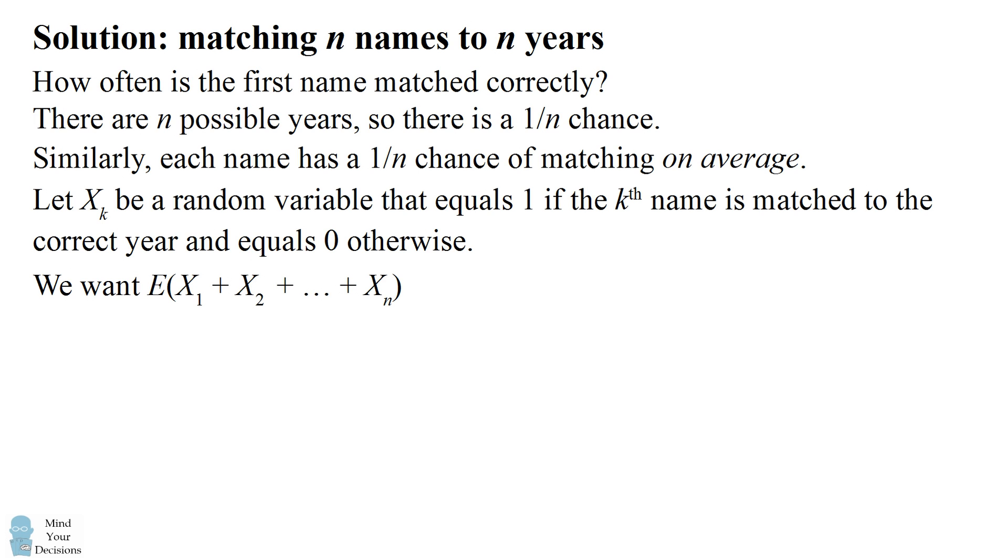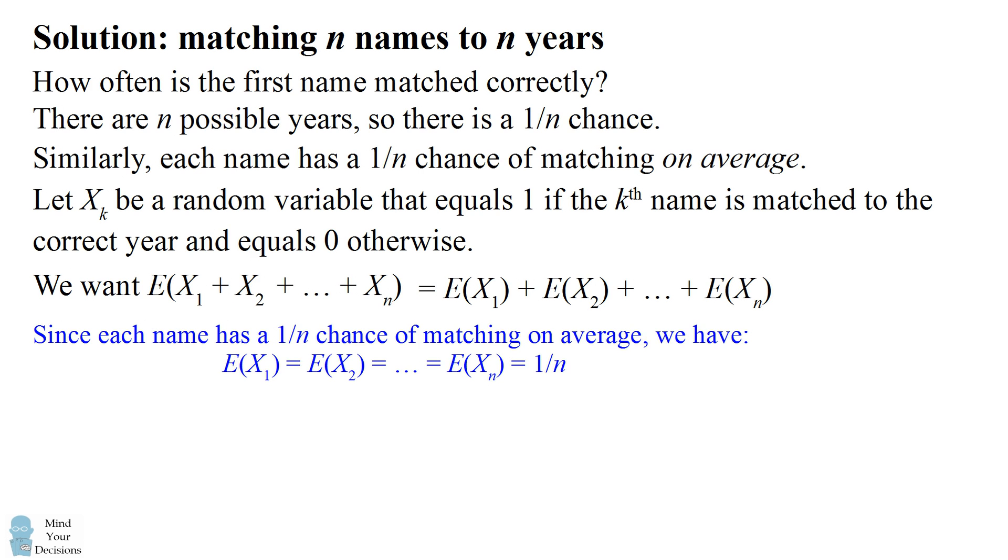So let's apply this property. We want the expectation of a sum of random variables and that's going to equal the sum of the expectations. Now what are each of these expectations? Well, E(X_1) is the expectation that we get the first name to be matched and E(X_k) is the expectation that we have the kth name matched. Well by symmetry we've figured out each of these is going to be equal to 1 over n.